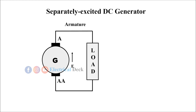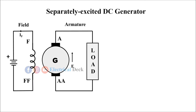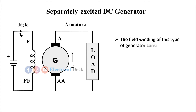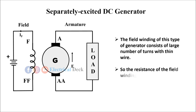In separately excited DC generator, the field winding is supplied from an external separate DC source. Here, we can see that the excitation to the field winding is separate from the armature, hence the generator is called a separately excited DC generator. The field winding of this type of generator consists of a large number of turns with thin wire, so the resistance of the field winding is high.